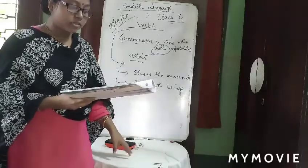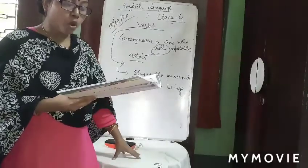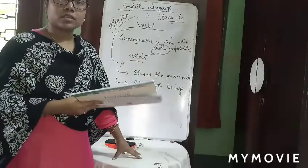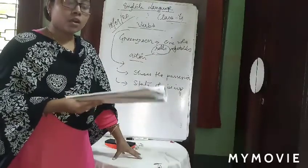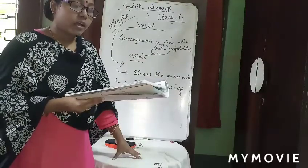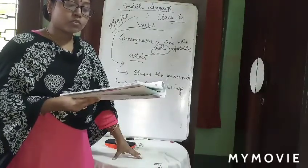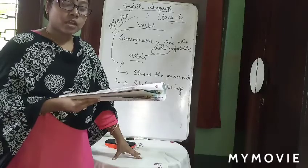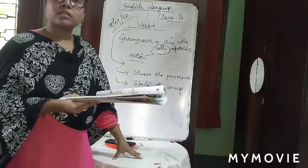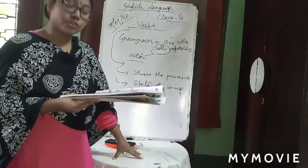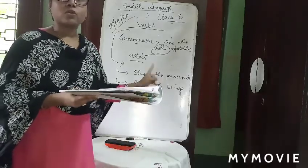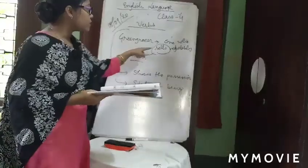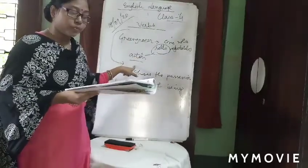So these are all actually action words — selling, stitches, paints. These all things are actually action words, they are called verbs. This action word is known as verb.